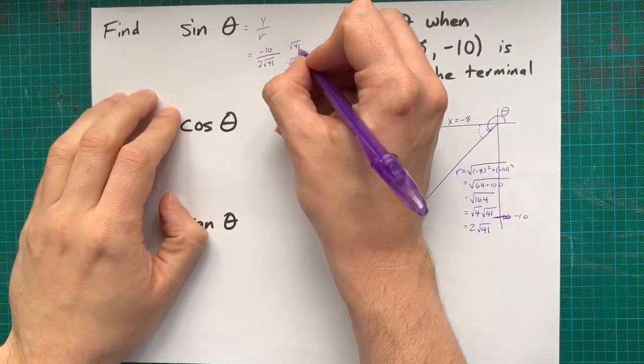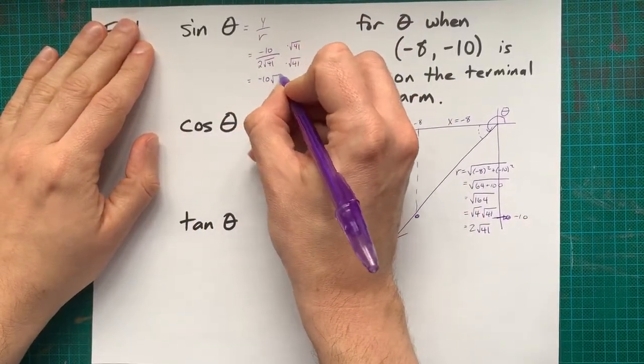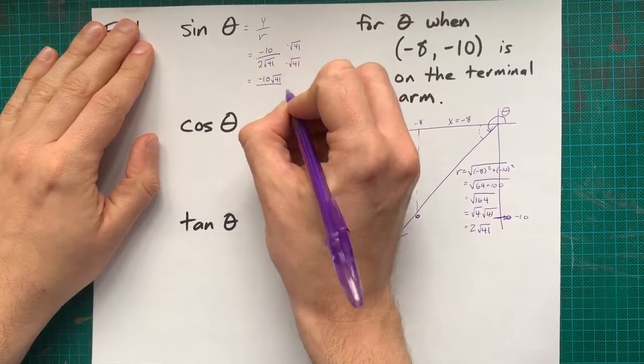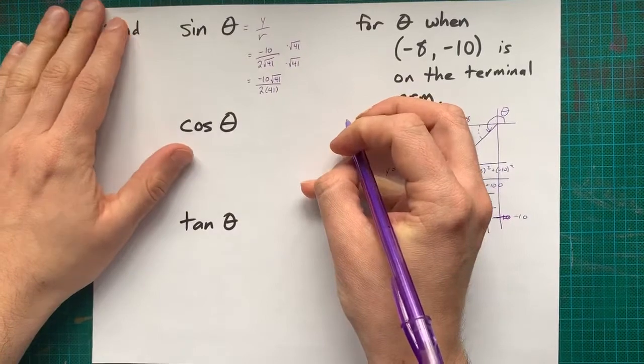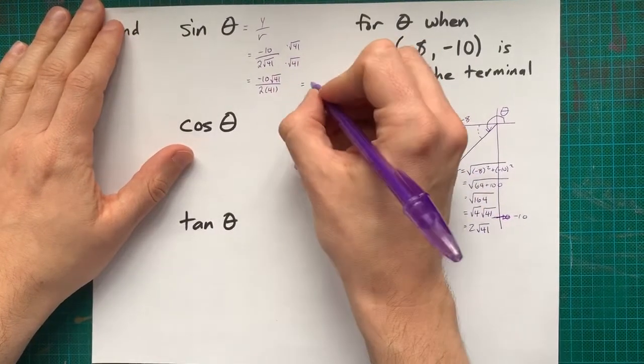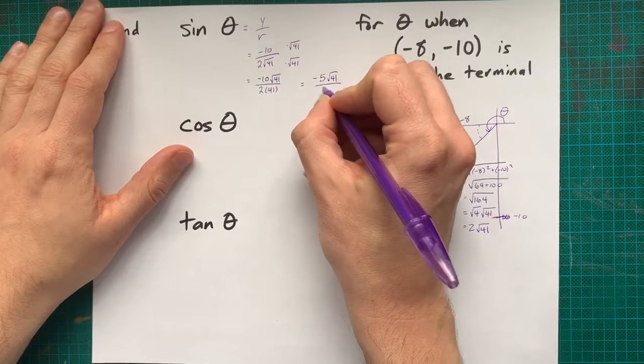That's multiplying the top and bottom by root 41. That gives me negative 10 root 41 on top and 2 times 41 on bottom. That still reduces for me. That's negative 5 root 41 over 41.